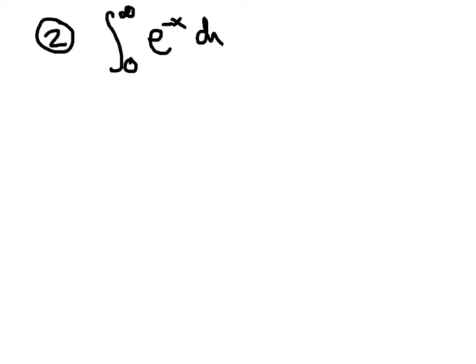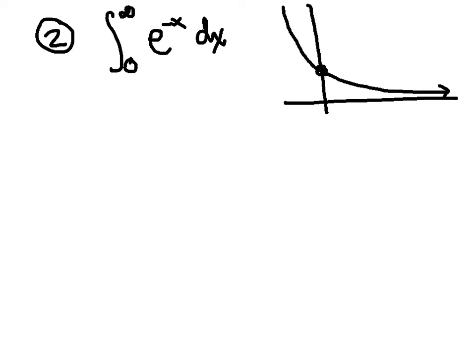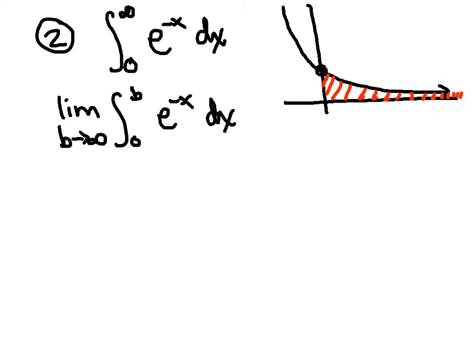Our second example looks very similar at first glance: the integral from 0 to infinity of e to the negative x dx. I want to draw a sketch to visualize what we're tackling — we have a decreasing exponential function that swoops in like this. Our integral starts at x equals 0 and goes all the way to infinity, and technically there's always a little sliver of a gap because the curve is asymptotic to the x-axis and never touches it. So again, we have an unbounded region, thus creating an improper integral. First things first: we rewrite in terms of a limit — the limit as b approaches infinity of the integral from 0 to b of e to the negative x dx.